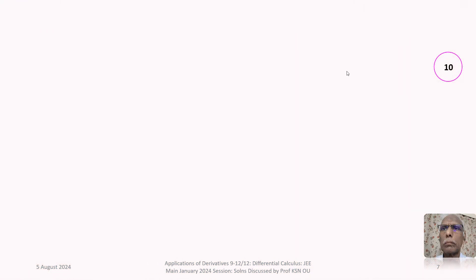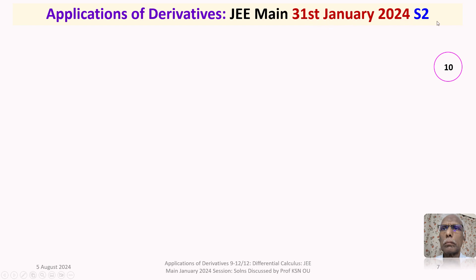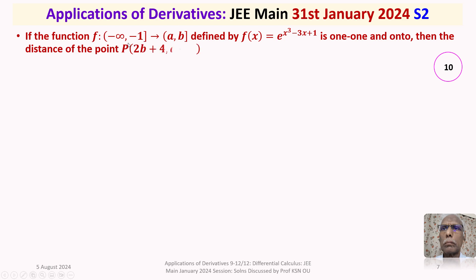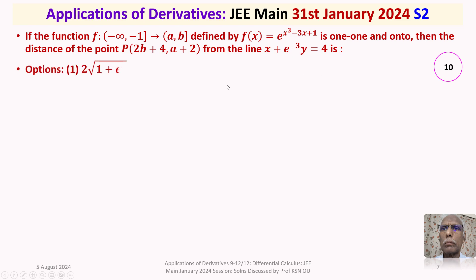This question appeared in the JEE Main exam held on 31st January 2024 in the second shift. The given question is: if the function f from the semi-closed interval (−∞, −1] to the semi-closed interval [a, b), defined by f(x) = e^(x³−3x+1), is 1-1 and onto — this is very important information — then the distance of the point P = (2b+4, a+2) from the line x + e^(−3)·y = 4 is... We are given 4 options.